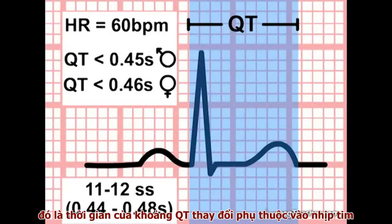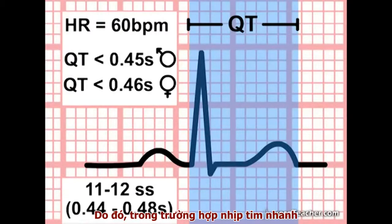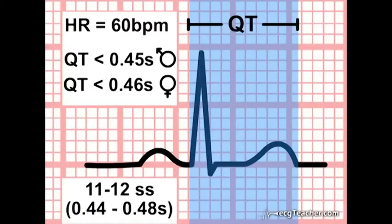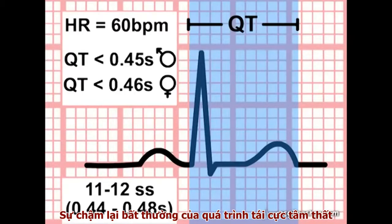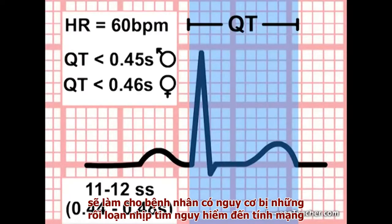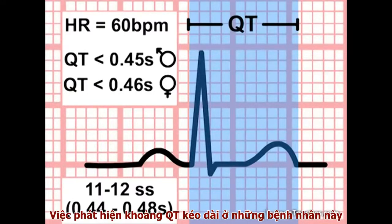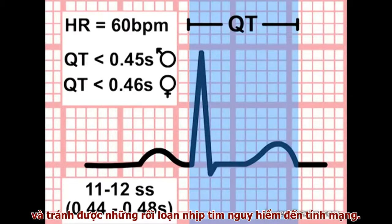It is important to realise that the measured QT interval varies with heart rate, becoming shorter as the heart speeds up, or longer when the heart slows down. Therefore, particularly at higher heart rates, it is possible to miss an underlying prolonged QT interval. Abnormally slow ventricular repolarization, evidenced by a prolonged QT interval on the ECG, places patients at risk of fatal arrhythmias when treated with certain commonly used drugs. The ability to identify prolonged QT in these patients can lead to use of alternative medications and avoidance of sometimes fatal arrhythmias.